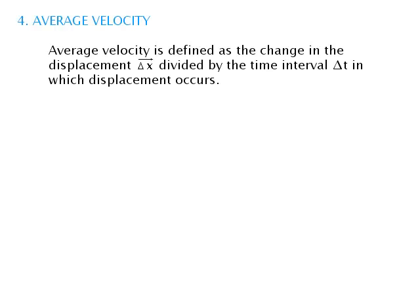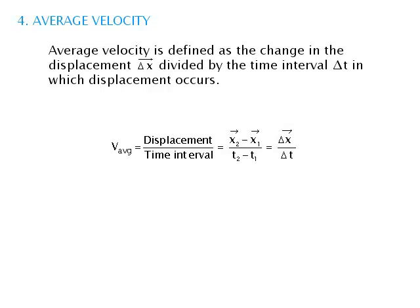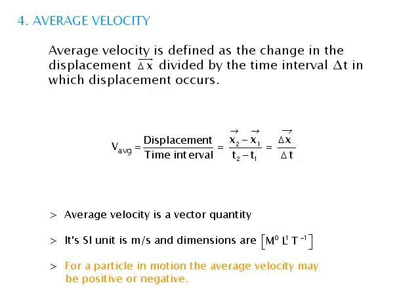Average Velocity is defined as the change in displacement Δx divided by the time interval Δt in which the displacement occurs. V_average is equal to displacement upon time interval, which is equal to (x2 − x1) upon (t2 − t1), which is equal to Δx upon Δt. Average Velocity is a vector quantity. Its SI unit is meter per second and dimensions are L¹M⁰T⁻¹. For a particle in motion, the average velocity may be positive or negative.